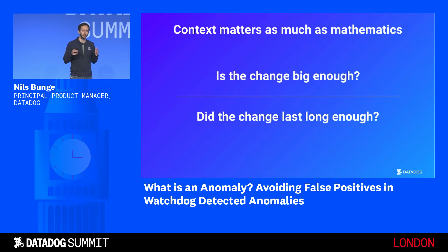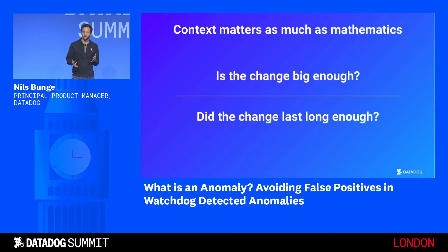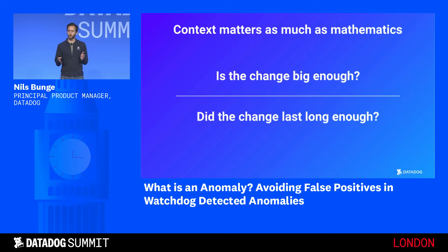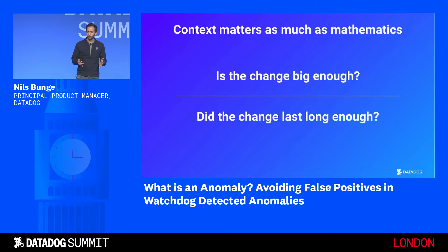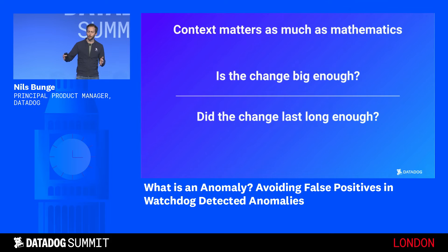Is the change big enough, or reaching a high enough value for us to care? For CPU type of data, we would likely add a lot of protections making sure we reach high thresholds, while for error rates we will likely be much more sensitive. It's the same for how long the anomalies last — we would adjust the confidence interval based on what we're looking at. Ideally, it would be a combination of both: if the change is large, we accept a shorter time frame before notifying people, but for a smaller change, we wait longer.